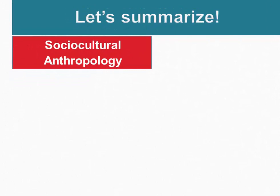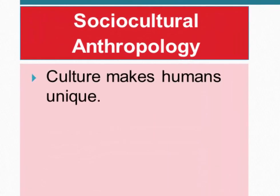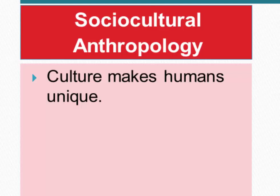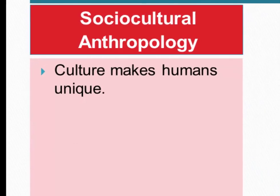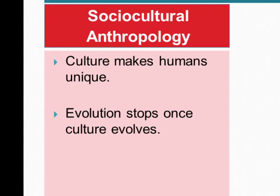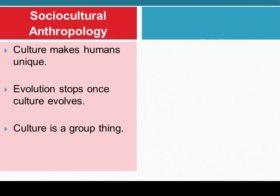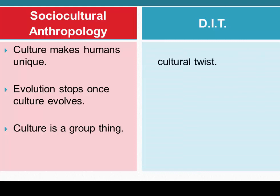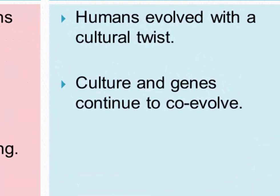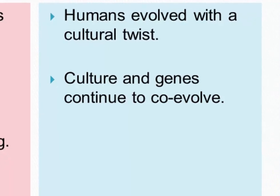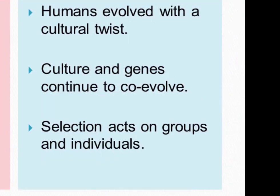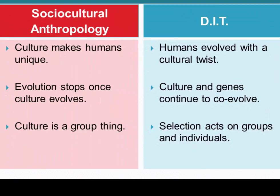Let's summarize the contrast we've drawn. First, we contrasted sociocultural anthropology to dual inheritance theory. Social cultural anthropologists, following the standard social science model, insisted that culture makes humans unique, that evolution stopped once culture evolved, and that culture is about groups. In contrast, dual inheritance theorists hold that humans evolved with a cultural twist, that culture and genes continue to co-evolve rather than evolution stopping once culture begins, and that selection acts on groups as well as individuals.